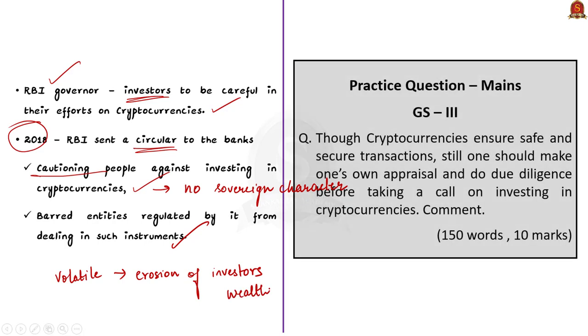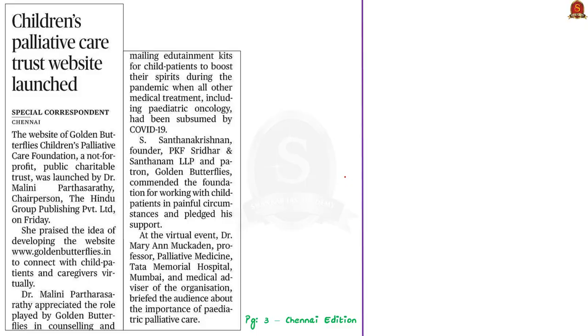With this, we have come to the end of the cryptocurrency discussion. In this discussion, we saw about cryptocurrencies, their advantages, their disadvantages, and RBI's view on cryptocurrencies. Now let us move on to the next article.